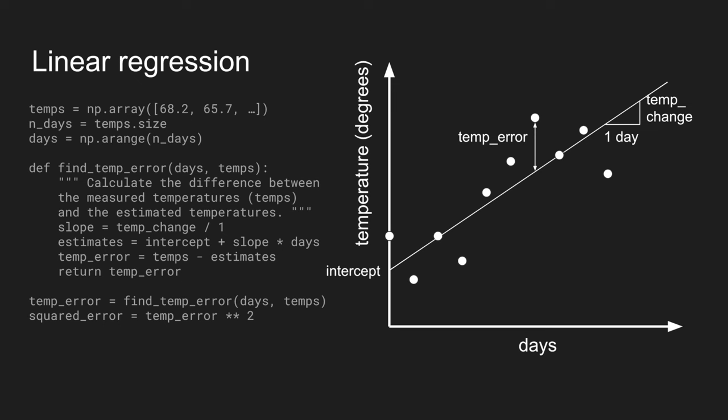If we were to change the intercept at all, if we were to change the slope at all, that sum of squared errors would go up. So we minimize that. And this is the Python for doing that.